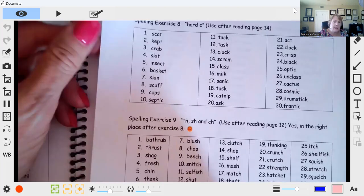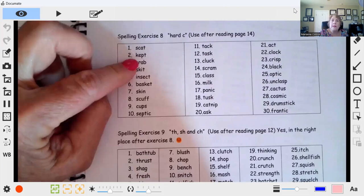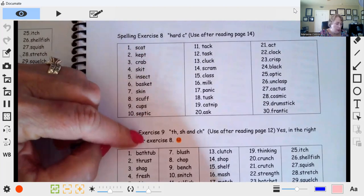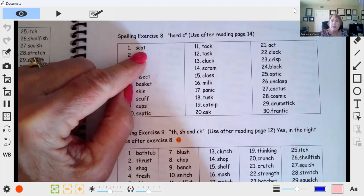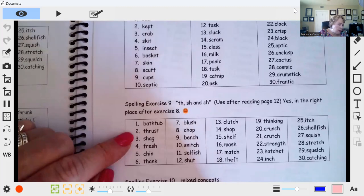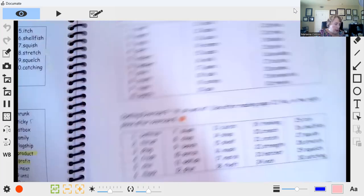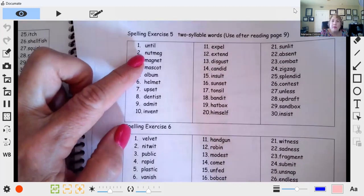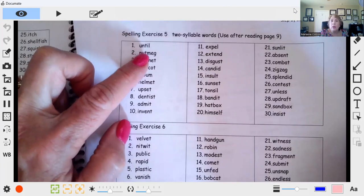Exercise eight, again, have them write the blend only at the beginning of the word, or day two, have them write the ending sounds. When you get into exercise five, you'll have syllables.